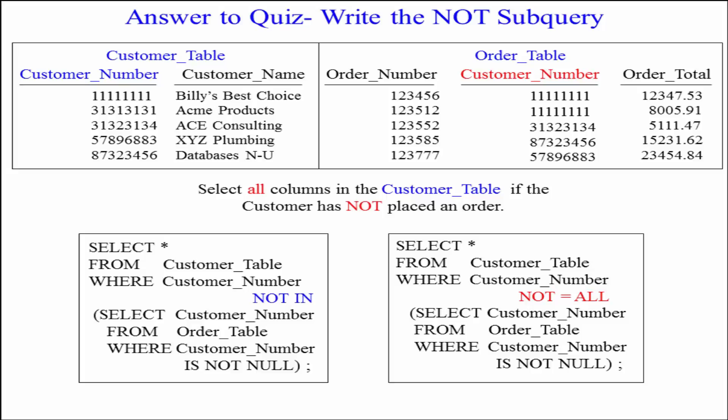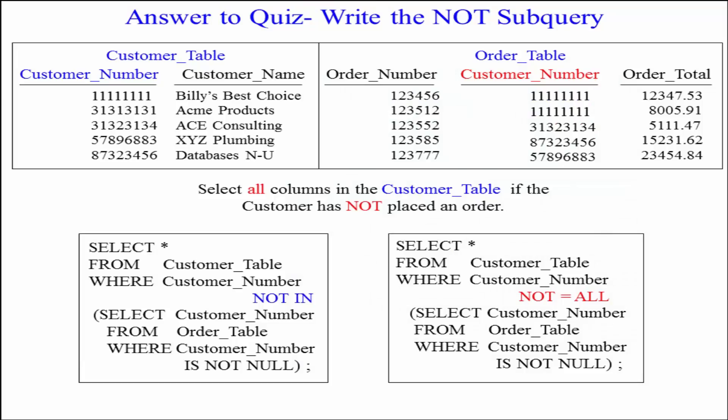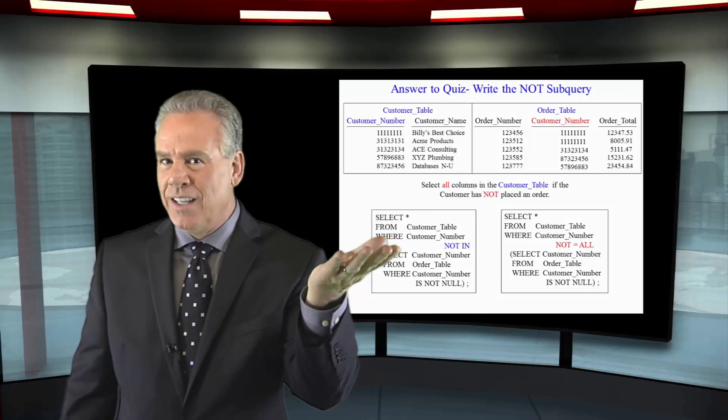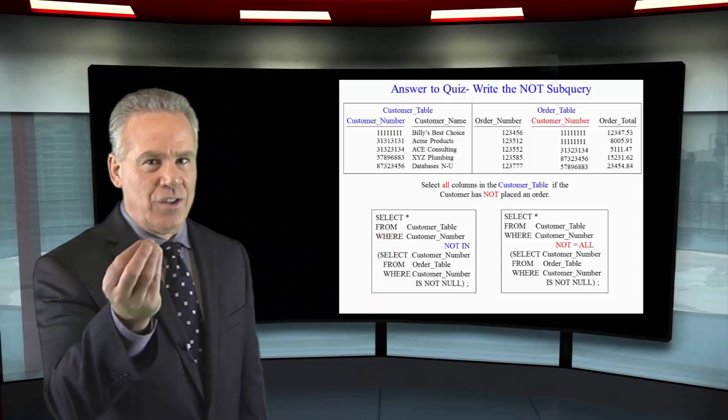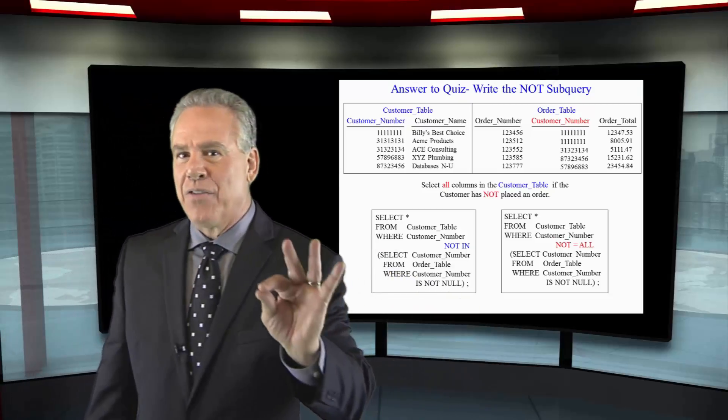And that's exactly what happens when you ask: is this value in the list — and there's a null. The database can't tell, since a null means no data, whether the value is in that list. So when you use NOT IN and there might be a null in that list, nothing comes back unless you say WHERE customer number IS NOT NULL. Dealing with IN is easy. Dealing with NOT IN, you have to make sure there are no nulls, or you include that IS NOT NULL clause.